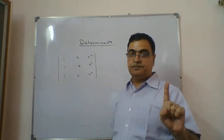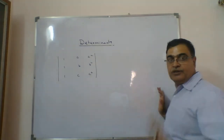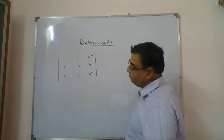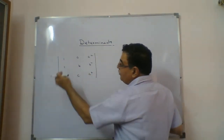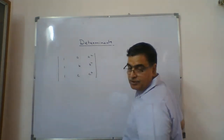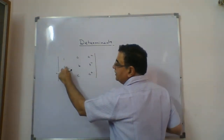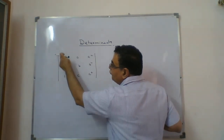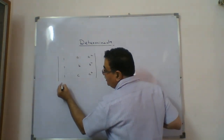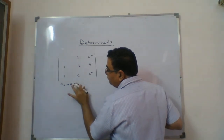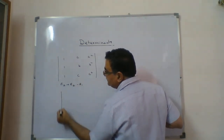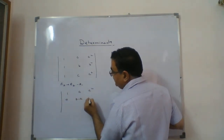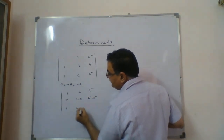Whenever a 'without expanding' question is asked and you can't make equal rows or columns, and three ones are visible — create two zeros. I create a zero here and here. The first step: R2 minus R1, so R2 becomes: 0, b-a, b²-a². Row 1 stays as 1, a, a²; row 3 stays as 1, c, c².